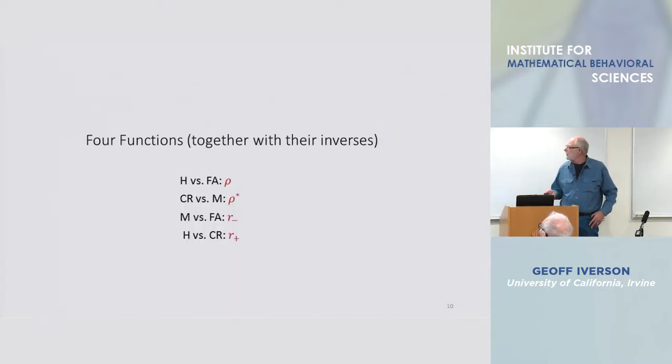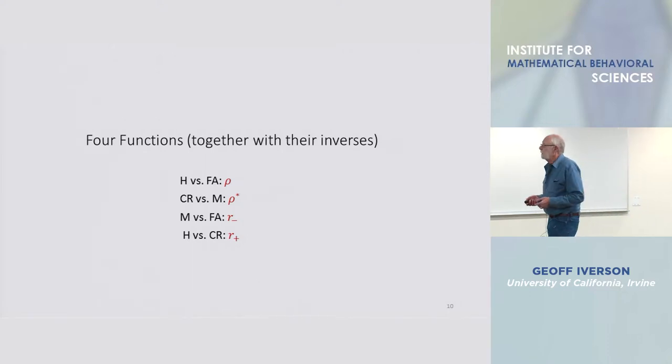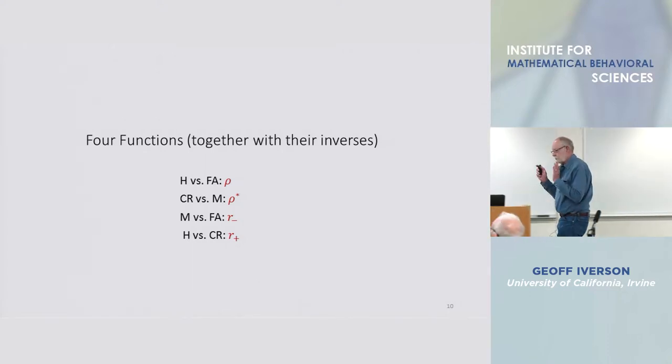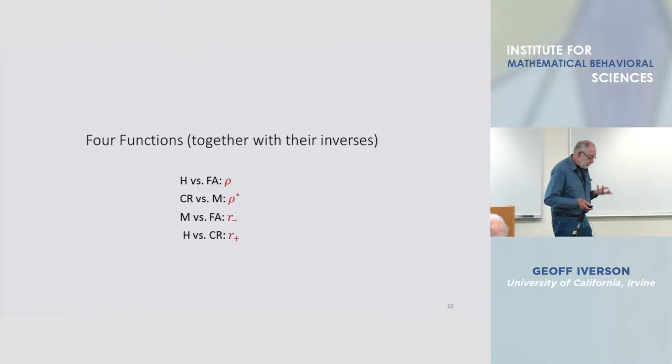So I'm going to be using a representation, for the most part not always, in which the evidence random variables take values in zero one. Now years ago George Sperling, not here, he was here yesterday,